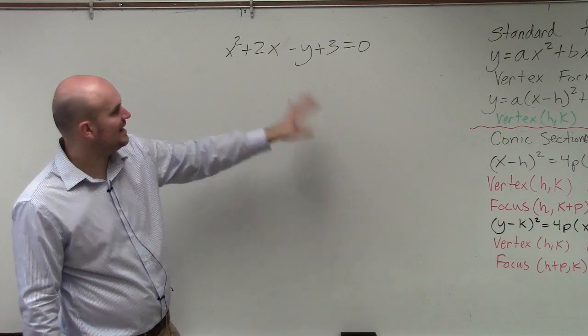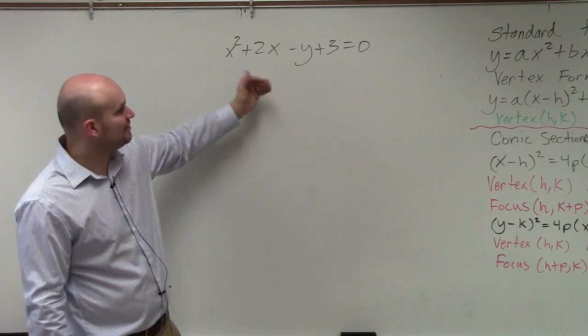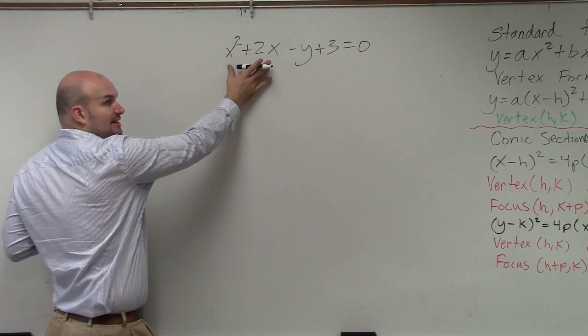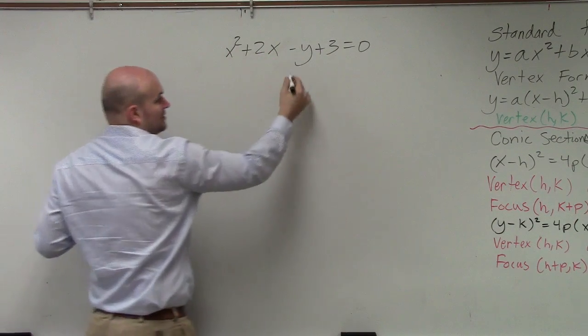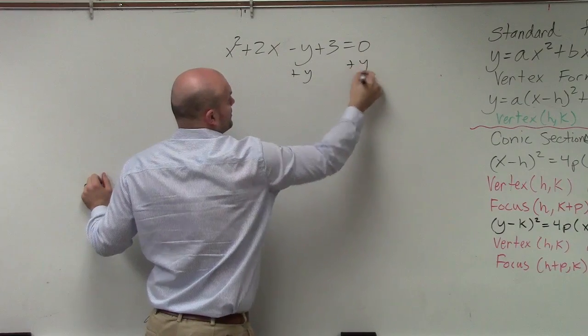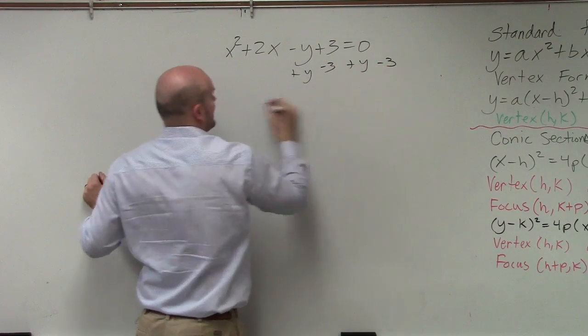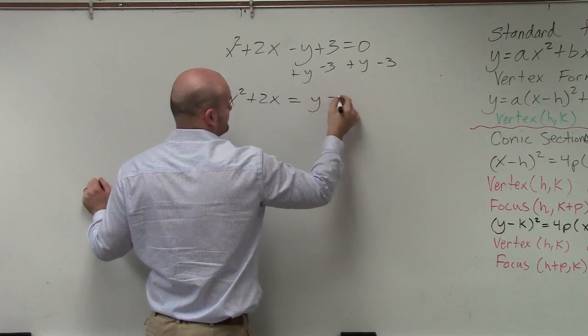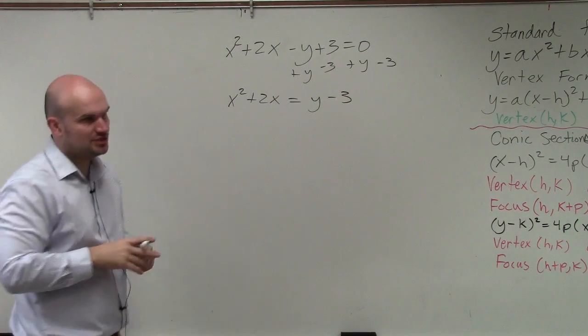So what you guys notice is, first of all, that the x, if we want to complete the square, we want to look for whatever is squared currently and create a perfect square trinomial. So what I'm going to do is I'm going to get everything away from the x squared plus the 2x.